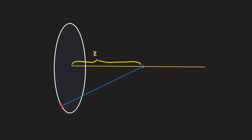Looking at this charged ring, the problem asked you to show that the electric field at point Z equals the given resulting equation. Your job was to use first principles to show that was true, which is what we were doing yesterday. They gave you the answer you were searching for, which helped give you a starting point. More importantly, it made clear that if you had to reuse that result later in the problem, you didn't have to go in blind.